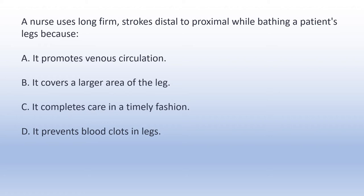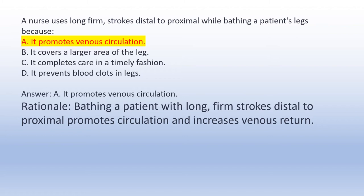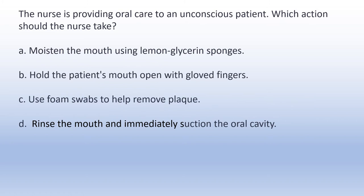A nurse uses long, firm strokes distal to proximal while bathing a patient's legs because: A. It promotes venous circulation. B. It covers a larger area of the leg. C. It completes care in a timely fashion. D. It prevents blood clots in legs. Answer A: It promotes venous circulation. Rationale: Bathing a patient with long, firm strokes distal to proximal promotes circulation and increases venous return.